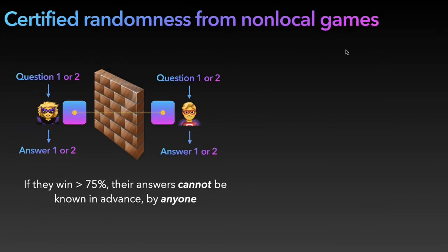The thing is, this is useful for randomness certification because you can show that if they win more than the classical case, their answers cannot be deterministic. They cannot be known in advance by anyone, even independently of the device they use, even if they don't really know how the devices behave, and even actually if quantum theory is not valid. This is a very strong result related to one of the most important discoveries of the 20th century. This is a very fundamental result in quantum information theory.